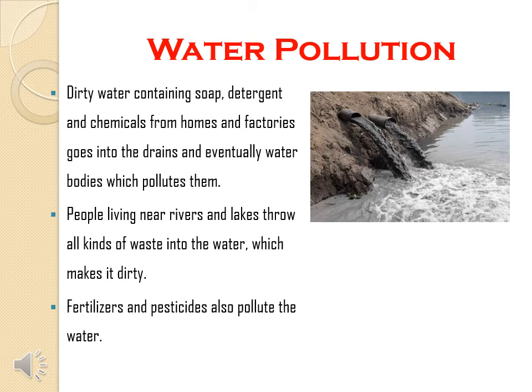Water Pollution: Dirty water containing soap, detergent and chemicals from homes and factories goes into the drains and eventually into water bodies, which pollutes them. People living near rivers and lakes throw all kinds of waste into the water, which makes it dirty. Fertilizers and pesticides also pollute the water.